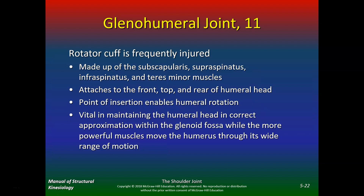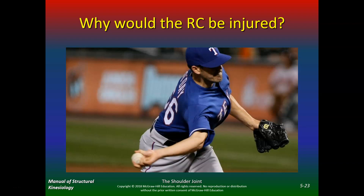The rotator cuff is a common injury in rehab and many patients. It's made up of the subscapularis, supraspinatus, infraspinatus, and teres minor, attaching to the front, top, and rear of the glenohumeral head. Its insertion enables humeral rotation and is vital in maintaining the humeral head in correct approximation within the glenoid fossa while more powerful muscles move the humerus through wide range of motion. The torque placed on the rotator cuff during a pitch is just unreal — that's a lot of torque.